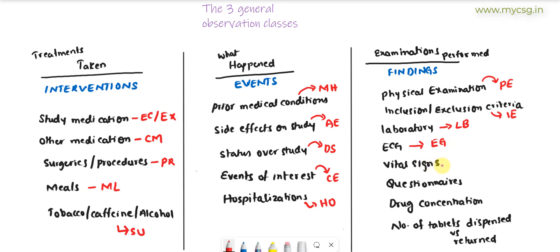We also collect information related to systolic blood pressure, diastolic blood pressure, and pulse variation over different time points while the subject is on study. Those vital signs findings are stored in a dataset called VS. In some studies there are questionnaires — such as pain severity scales — and that questionnaire data is considered a finding and stored in a dataset called QS.